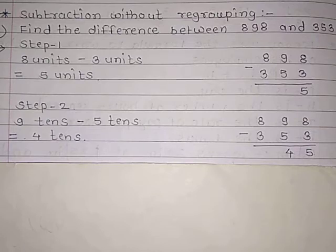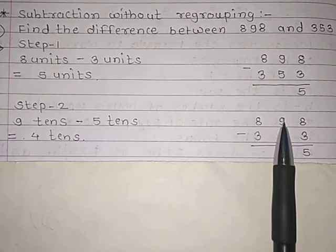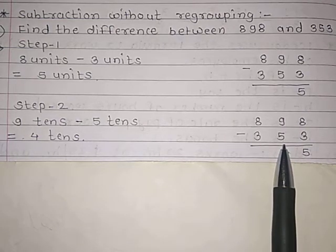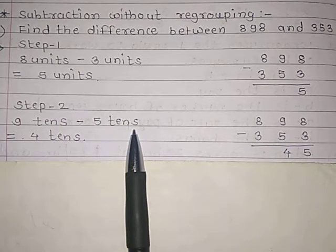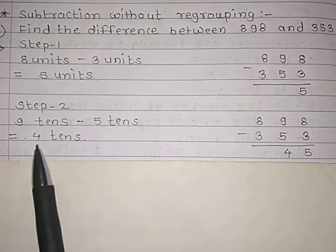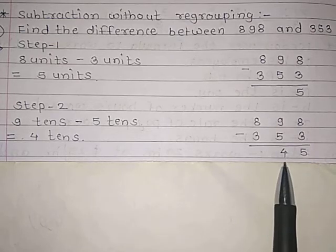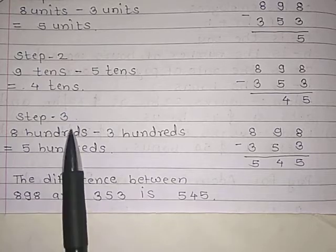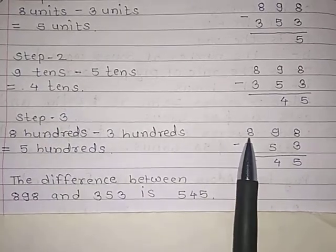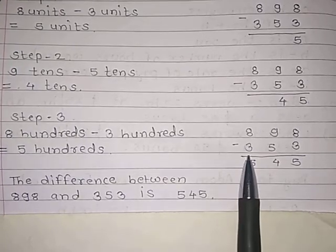Now Step 2: We have to move to the tens place values. We have 9 tens minus 5 tens. So 9 minus 5 equals 4 tens.